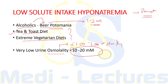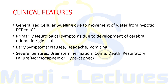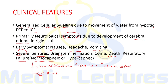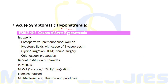The clinical features of hyponatremia are due to generalized cellular swelling from movement of water from the hypotonic ECF into the ICF. Symptoms are primarily neurological due to cerebral edema within the rigid skull. Early symptoms include nausea, headache, and vomiting. Severe symptoms include seizures, brainstem herniation, coma, and death. Respiratory failure in this setting is typically normocapneic or hypercapneic due to non-cardiogenic neurogenic pulmonary edema with normal pulmonary capillary wedge pressure.